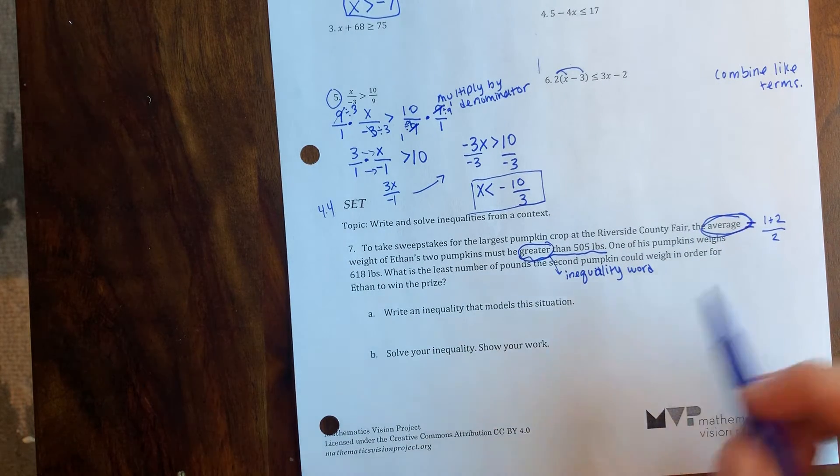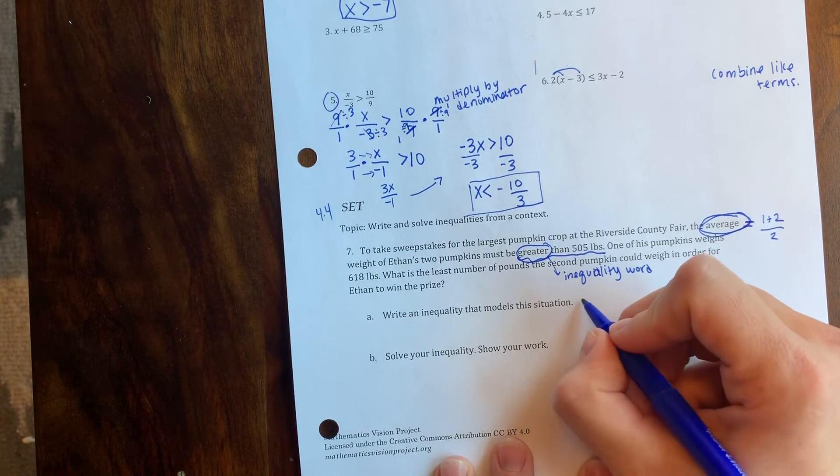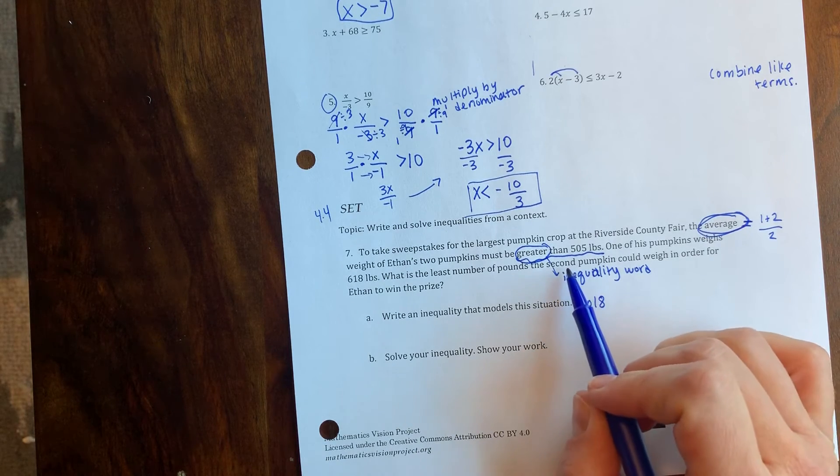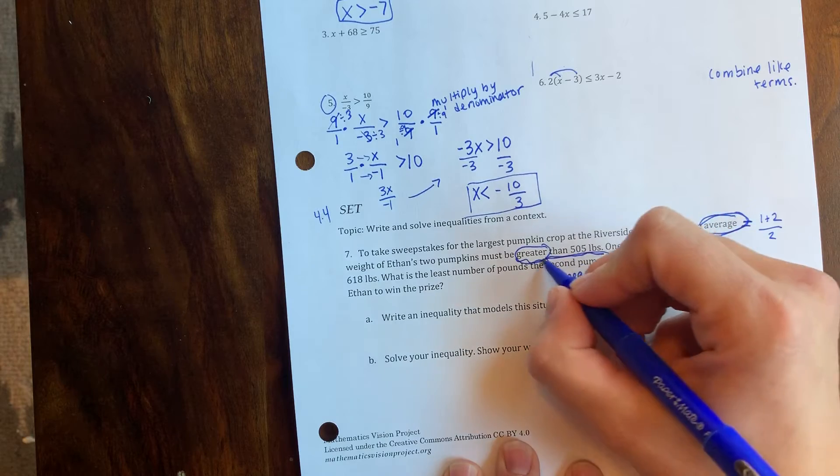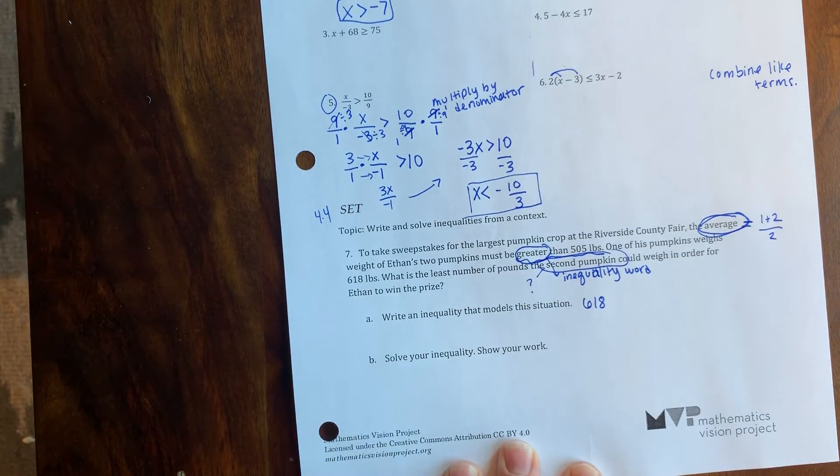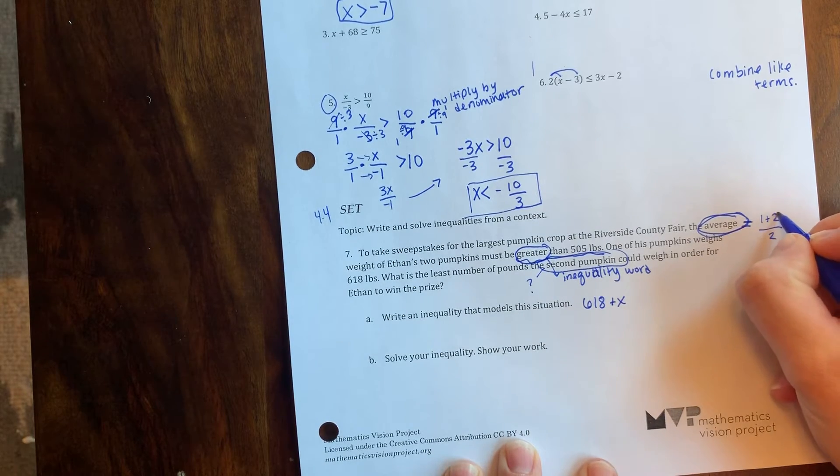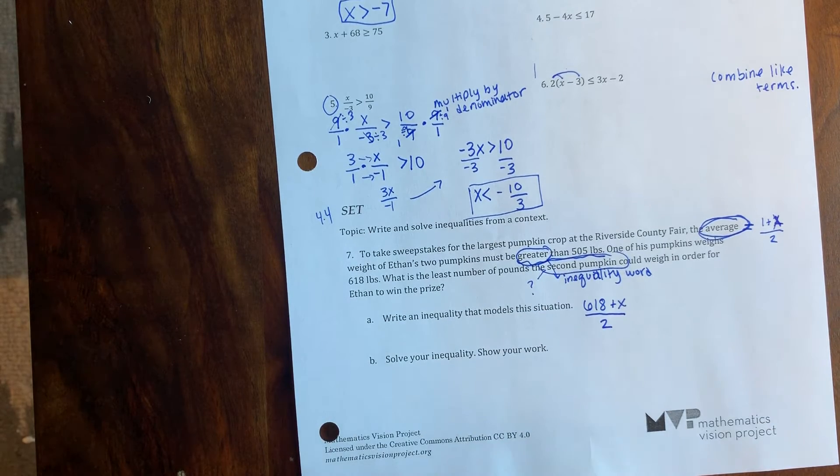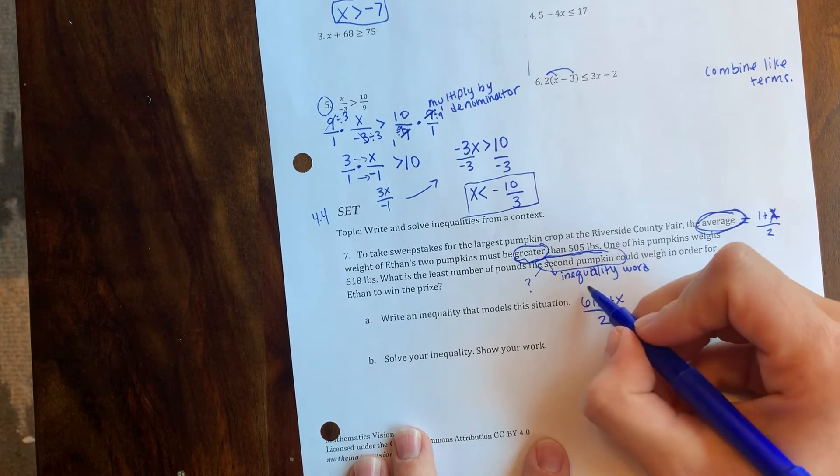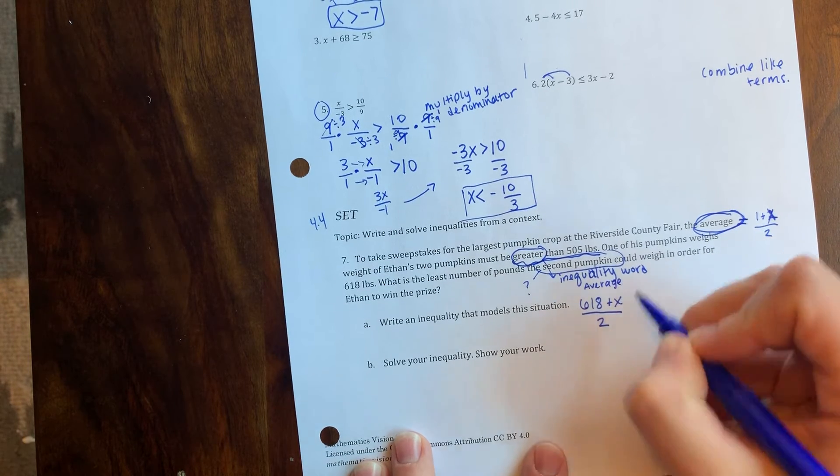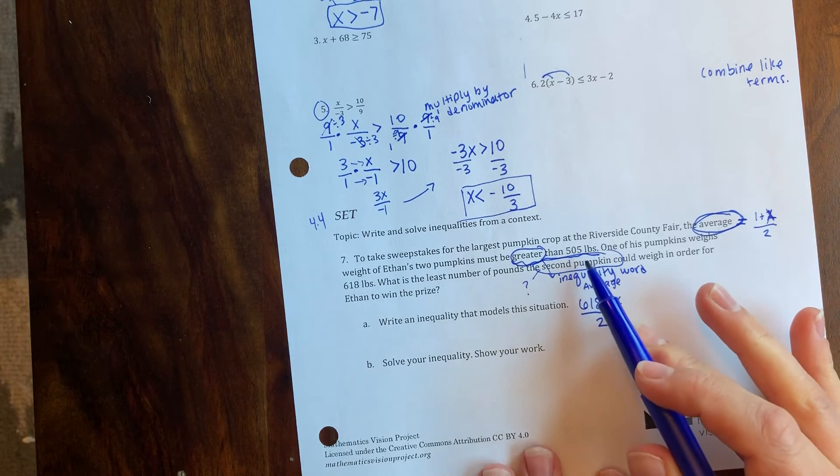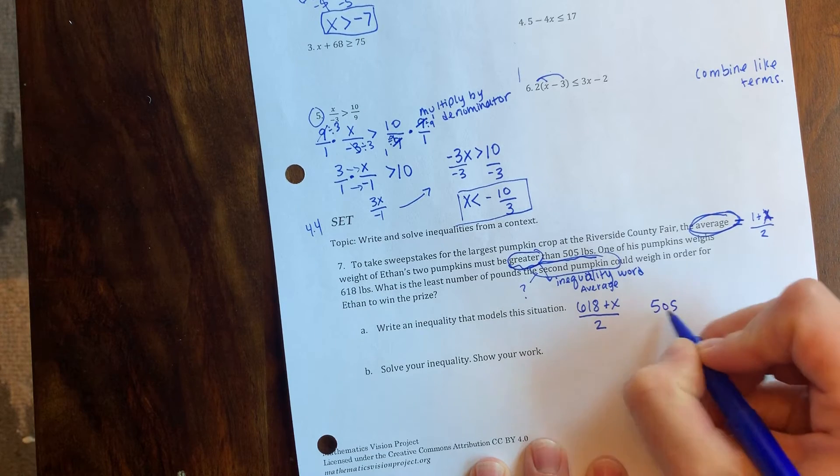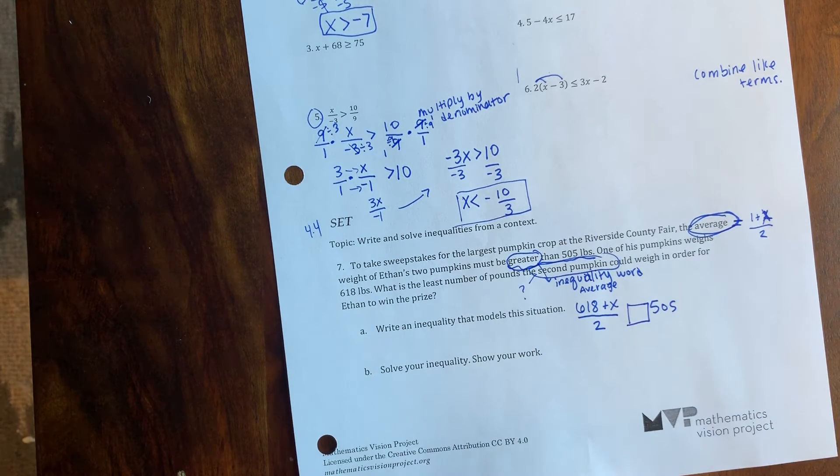So the first pumpkin is 618 pounds and we want to know what the second pumpkin is. That's what we don't know, that's our x. So we're adding the second pumpkin, that's our x value, and we're gonna divide that by two. And that average has to be greater than 505 pounds. So 505 is gonna go here and you have to determine what inequality goes there.